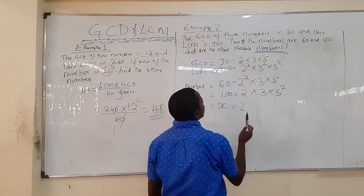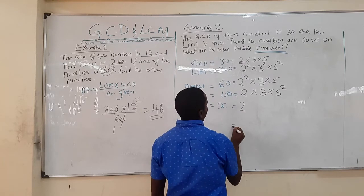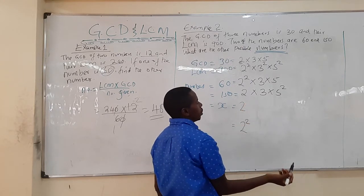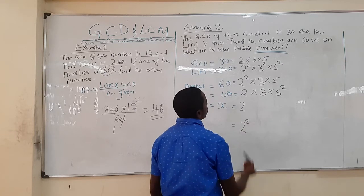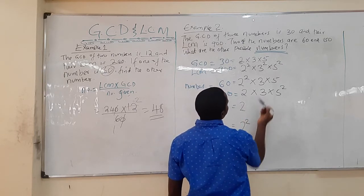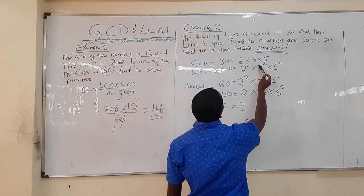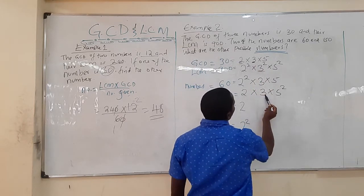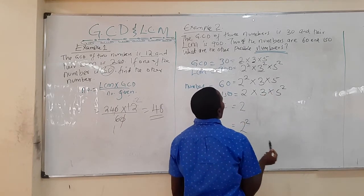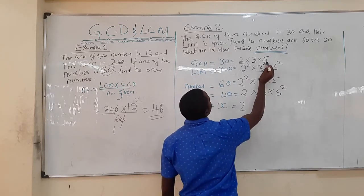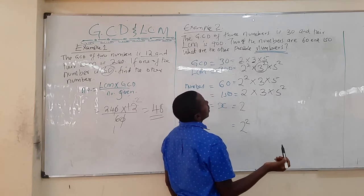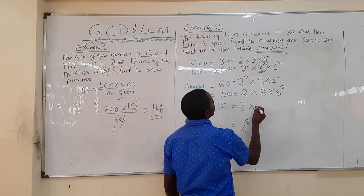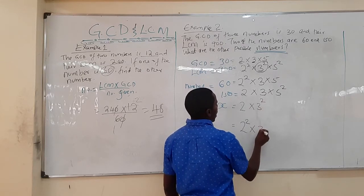Since 150 already has 2¹, X can be 2¹ or 2². Moving to the factor 3: the GCD has 3¹ and the LCM has 3². Both given numbers have only 3¹, meaning the 3² in the LCM must come from X. Therefore X must have 3².